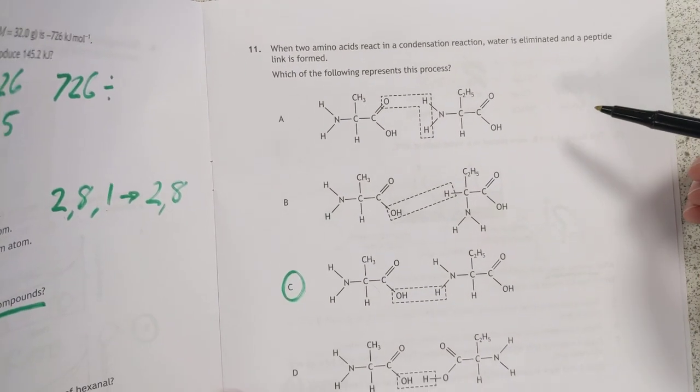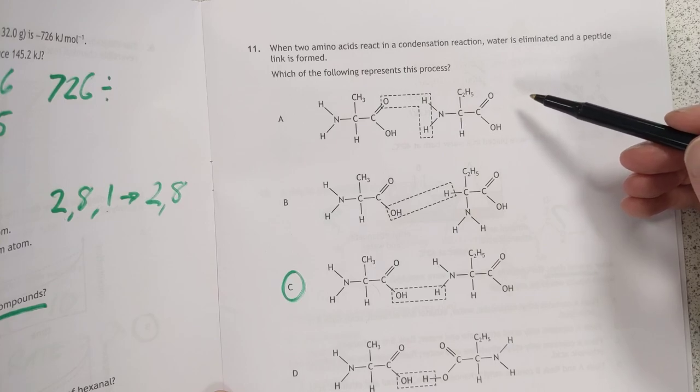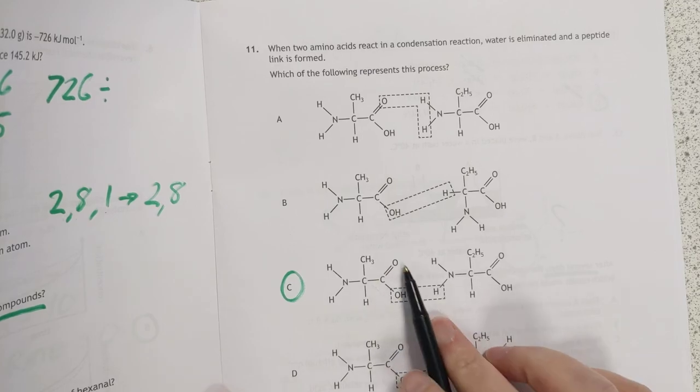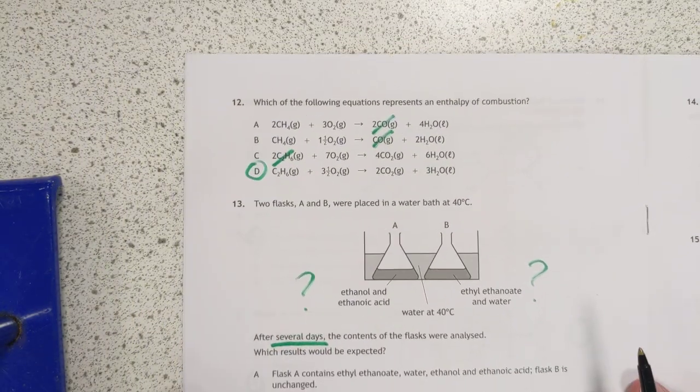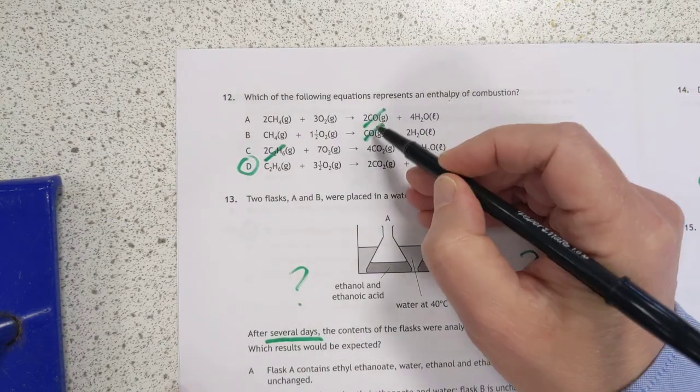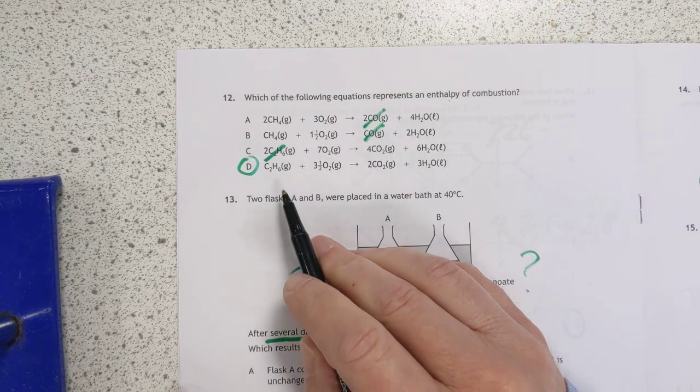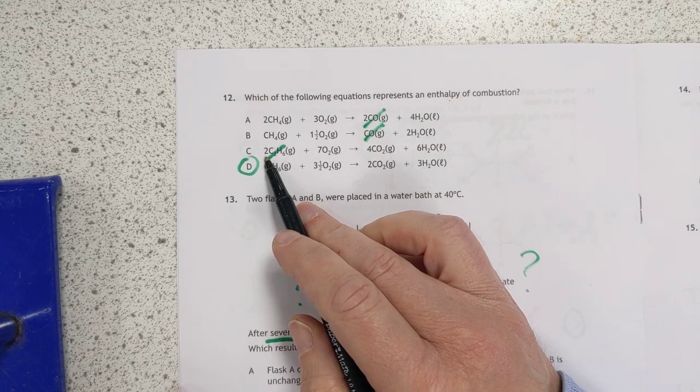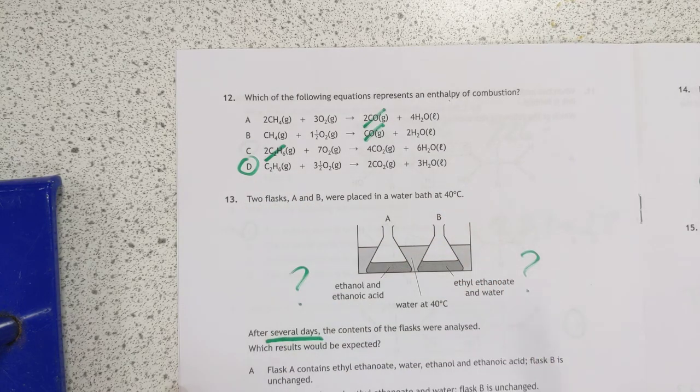Number 11. Condensation for joining up two amino acids. The simple answer is this, you just know it. It's the OH of the carboxylic acid and the H of the amine group. That is the correct answer. Number 12. Enthalpy of combustion is defined as being complete combustion, so these two are out. So what's wrong with this one here then? This one here is burning 2 moles of fuel and the definition involves only burning 1 mole. That's why the answer is D.